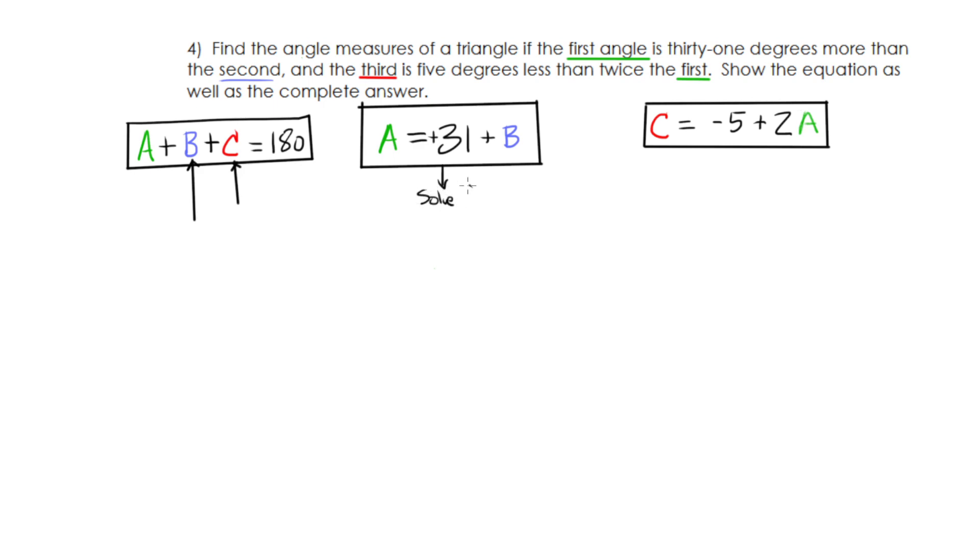So all I have to do to solve for B is do the opposite of the 31 here to get B by itself. So I do minus 31 and minus 31 and I will get, let's see, these cross out and I will get A minus 31 equals B. So this is a nice new equation that can get plugged into B.